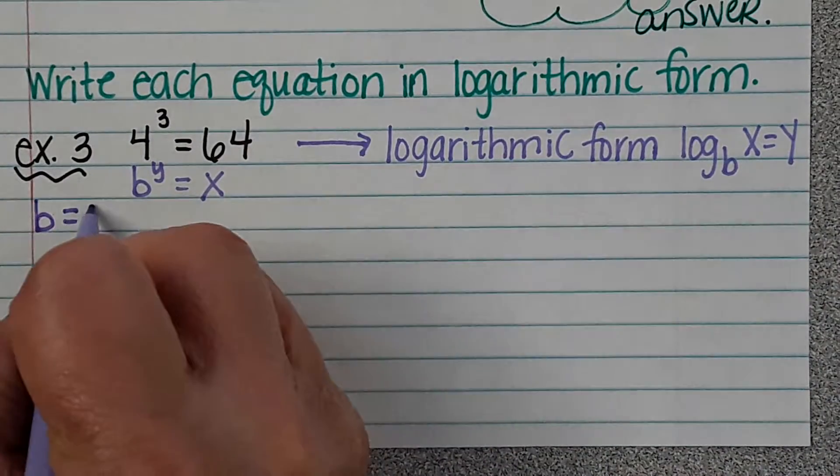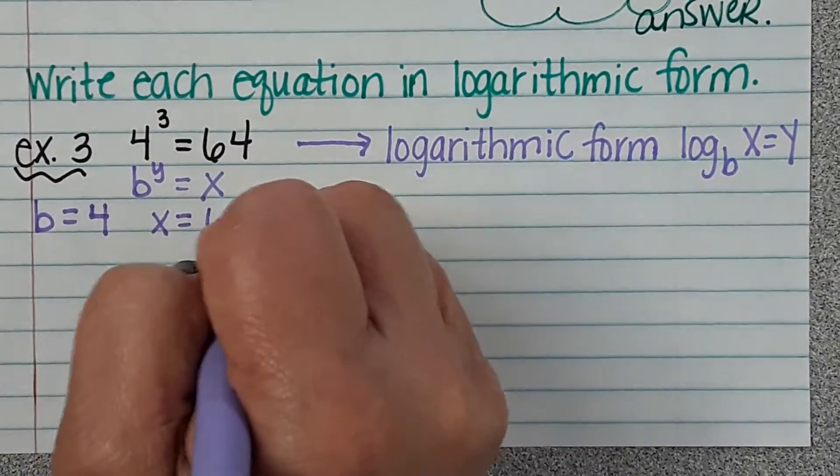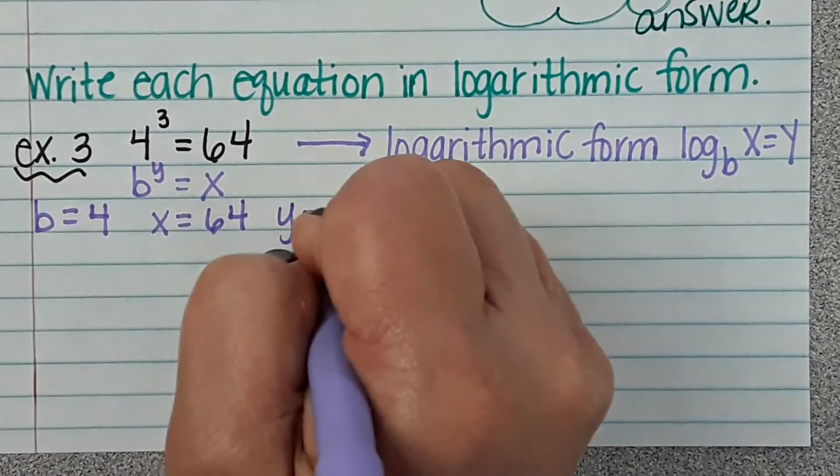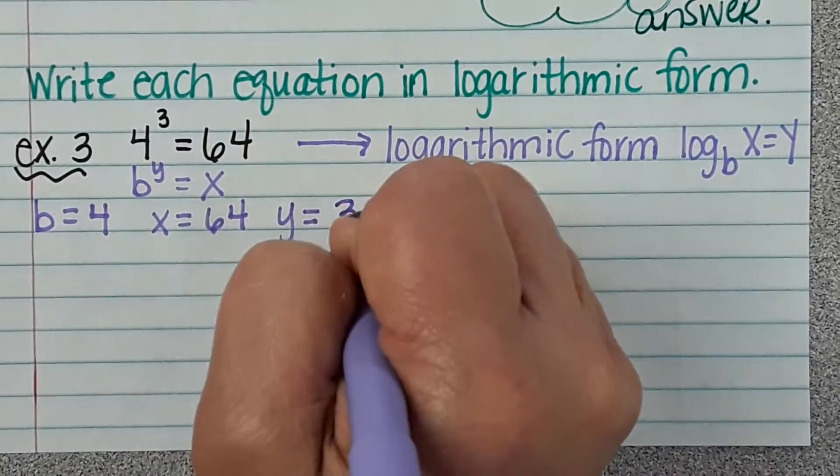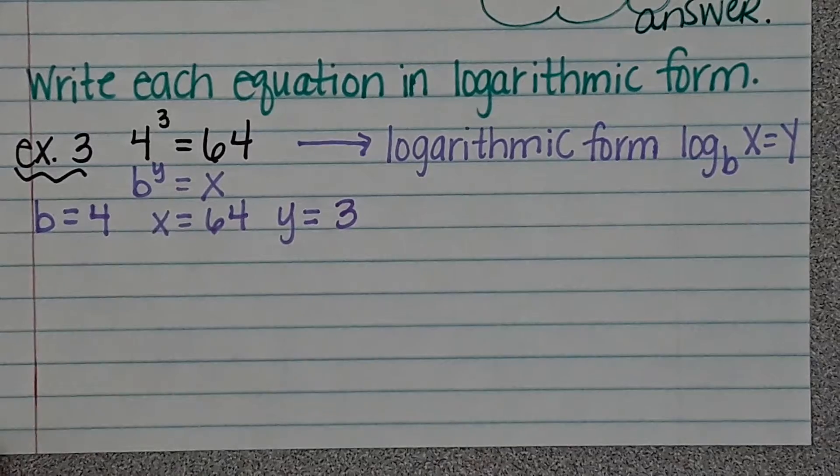So b is 4, x is 64, y is 3. So now we're going to take this information and we're going to write it in logarithmic form.